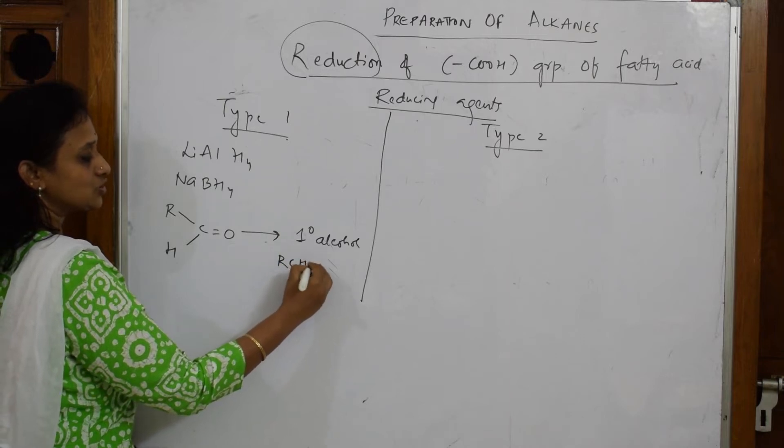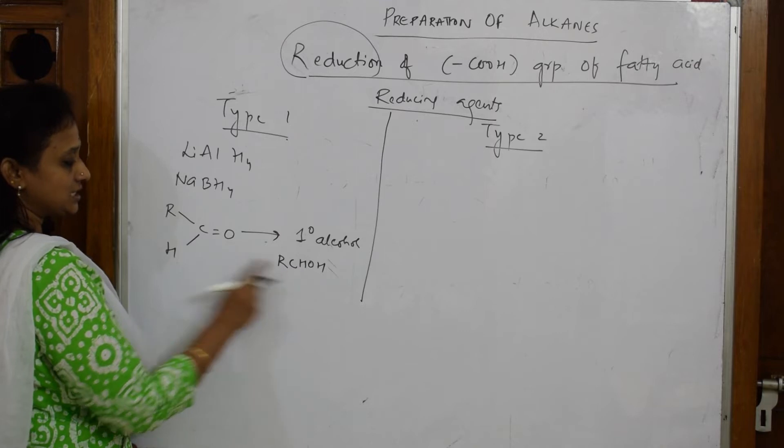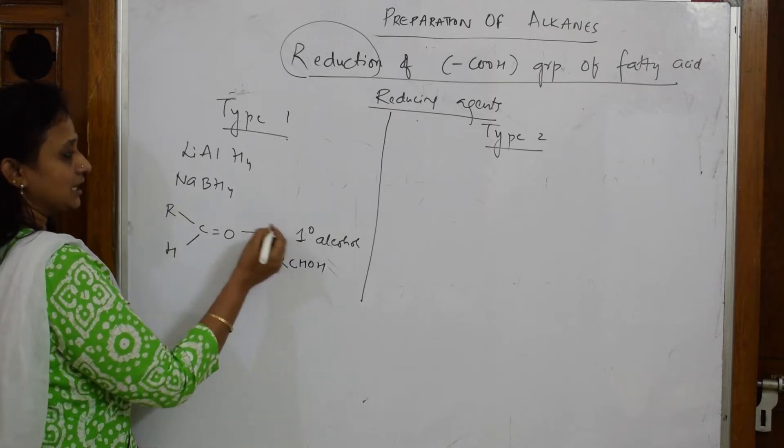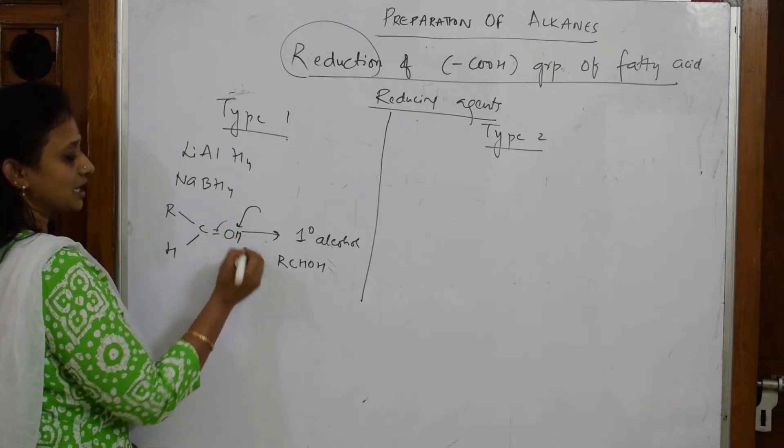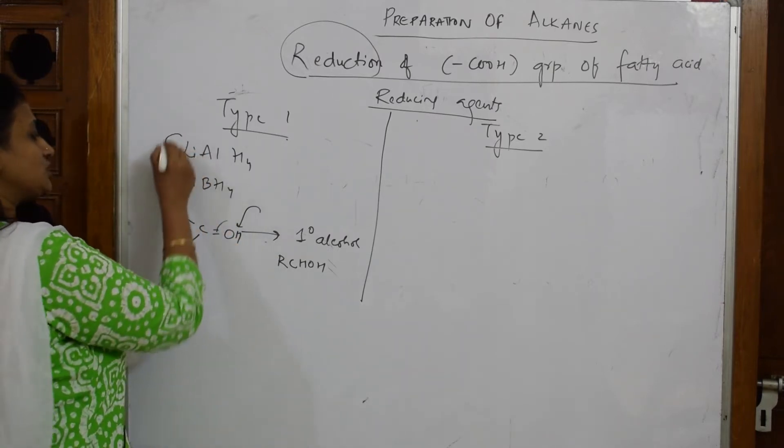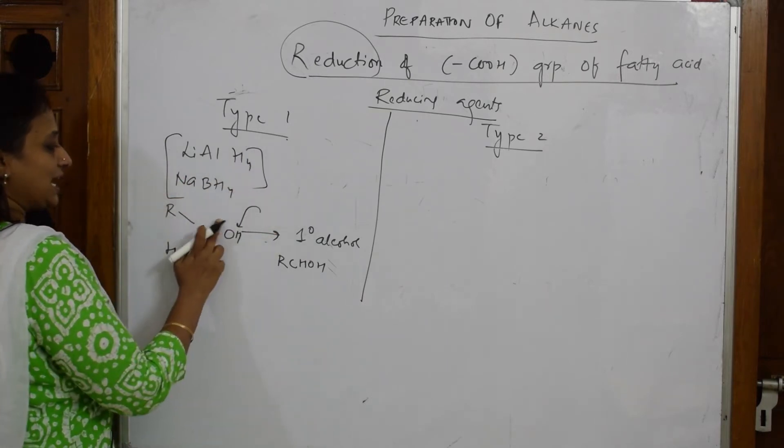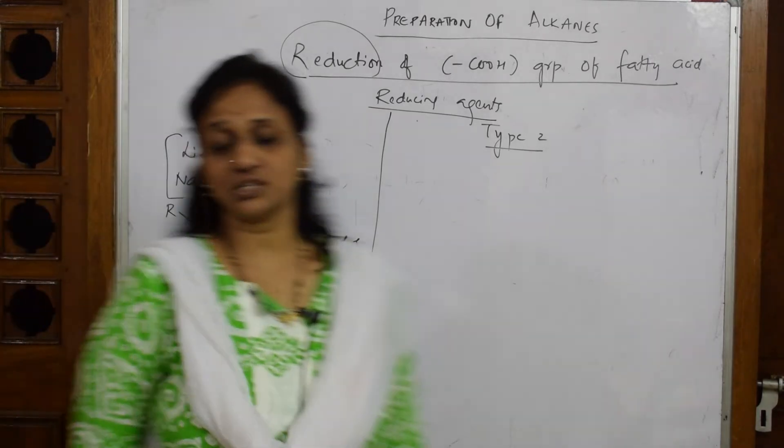That means what is this primary alcohol? It is nothing but R-CH2-OH. What happened? R is here, C is here, H is here, this particular bond is broken and hydrogen is added. Reduction is nothing but addition of hydrogen. Whenever you have such type of reducing agents, aldehydes are going to get converted into primary alcohols.